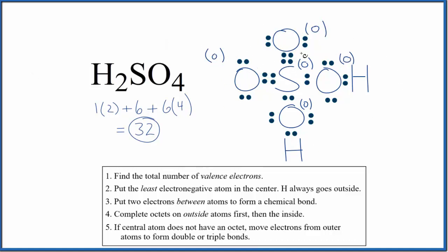Each oxygen still has eight valence electrons. The sulfur, it has two, four, six, eight, 10, 12, but that's okay. Sulfur can have more than eight. It can have an expanded octet. So this really is the best Lewis structure for H2SO4, where we have the two double bonds on the oxygens.